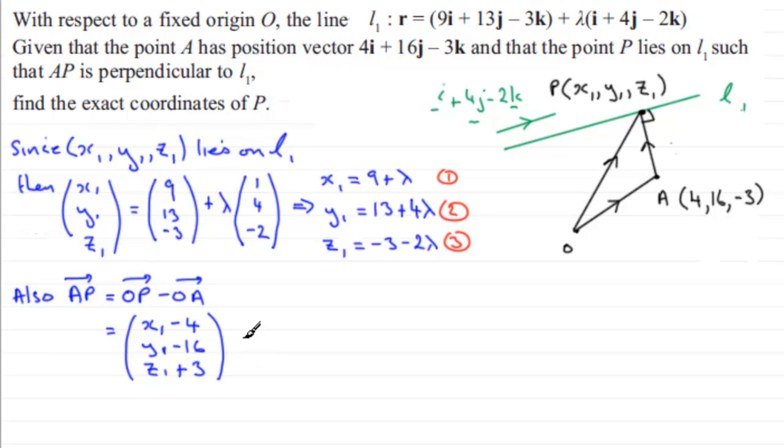And if we now put in our values for x1, y1, z1 in here, we're going to get a new vector. So x1, we've got 9 plus lambda, minus that 4, is going to give us 5 plus lambda. For y1, we've got 13 plus 4 lambda, minus 16, gives us 4 lambda minus 3. And then for z1, minus 3 minus 2 lambda, plus the 3, gives us minus 2 lambda. So we'll just put that there. We could say that we were taking this from 1, 2, and 3.